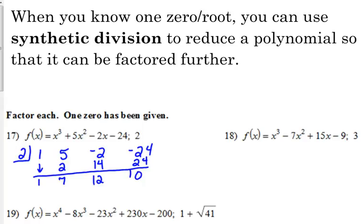12 times 2 is 24. Negative 24 plus 24 is 0, which it should be because they told us 2 was a zero. Remember, we learned remainder theorem yesterday. The remainder is the value of the function. And that's x squared plus 7x plus 12.